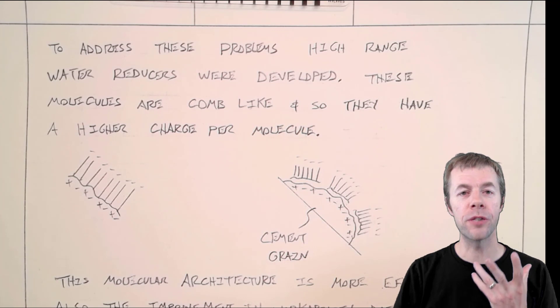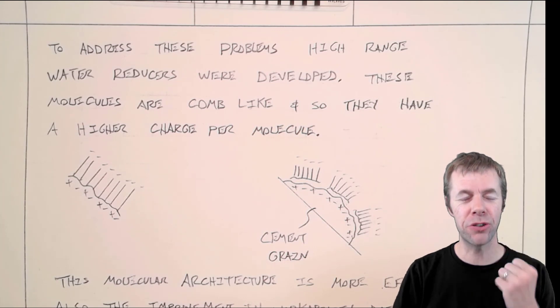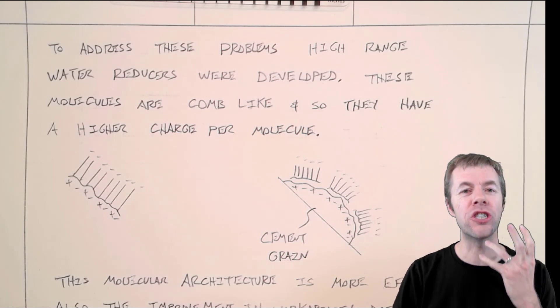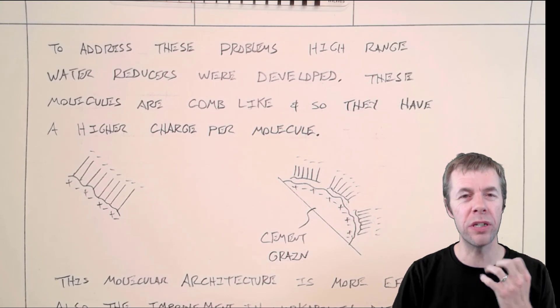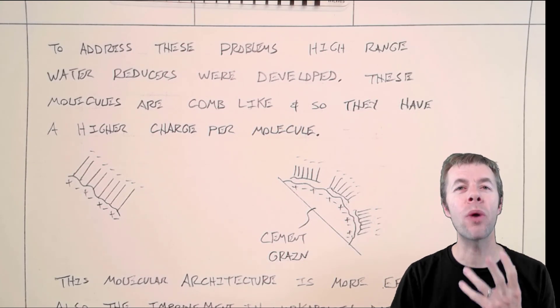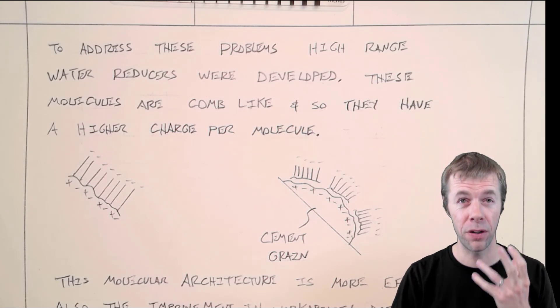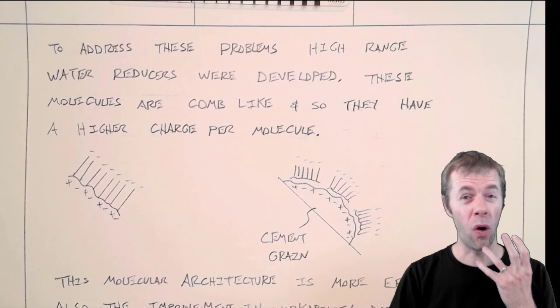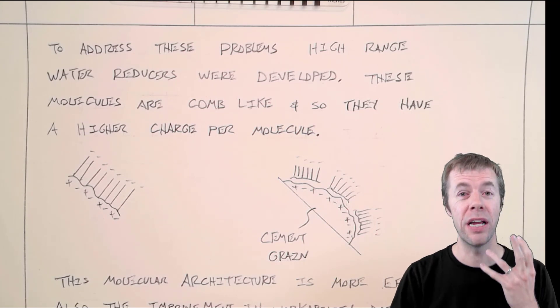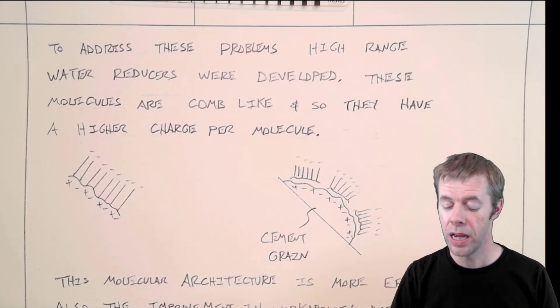To address this problem, the admixture industry answered. They said we're going to change the game, do things really different. We're going to develop high-range water reducers that have a totally different shaped molecule. This is a polycarboxylate ether. These are a game changer in the world of water reduction.